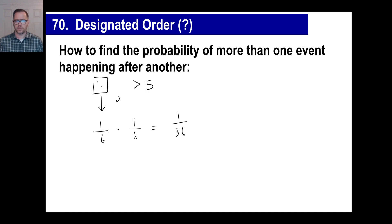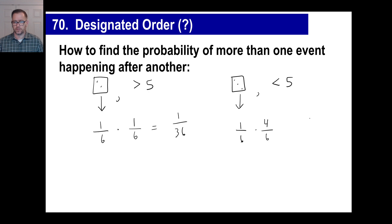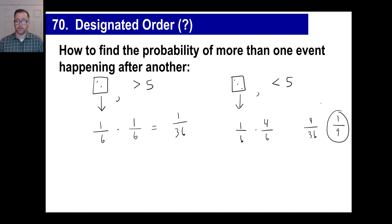Let's try another: what's the probability of rolling a three, then a number less than five? The odds of rolling a three are one out of six. Numbers less than five are one, two, three, and four — that's four out of six. Multiply: one times four equals four, and six times six is 36. Four out of 36 reduces to one out of nine.